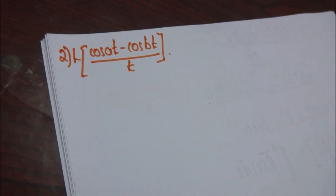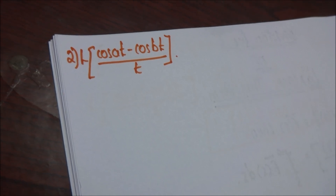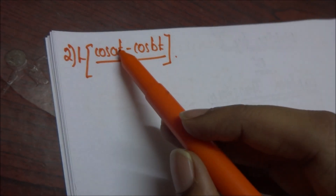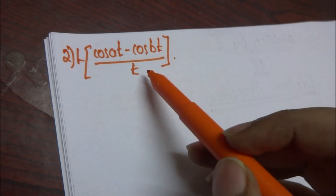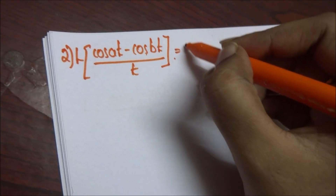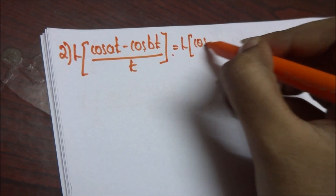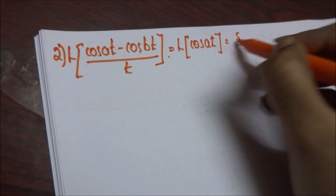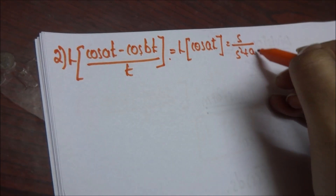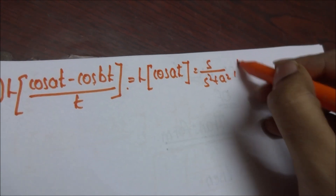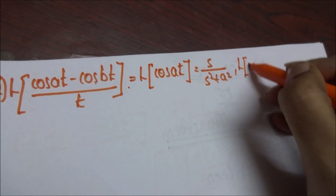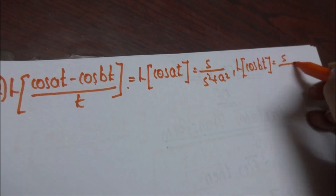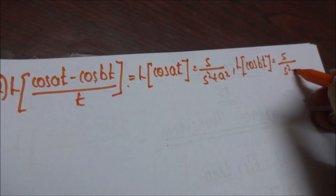Here is the second problem on division by t of Laplace transform. The given problem is Laplace of (cos(at) minus cos(bt))/t. The formula for Laplace of cos(at) is s/(s² + a²), and the formula for Laplace of cos(bt) is s/(s² + b²).